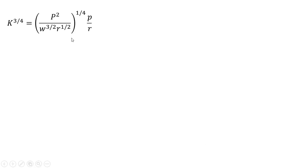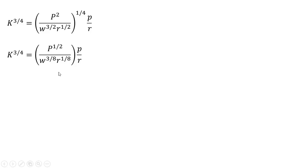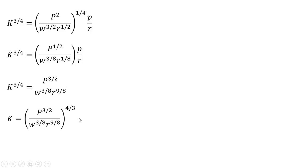Moving on and rewriting that last step. This 1/4 times the 2 in the exponent gives us P to the 1/2. This 1/4 times 3/2 is where this 3/8 is coming from. And 1/4 times 1/2 is where this 1/8 is coming from. R times R to the 1/8 is just R to the 9/8 power. And P times P to the 1/2 is where P to the 3/2 is coming from. Now raising both sides to the 4/3 power and simplifying gives us our input demand function for capital, where capital is a function of the price of the output good, the price of labor, and the price of capital.